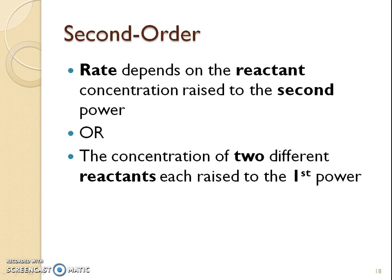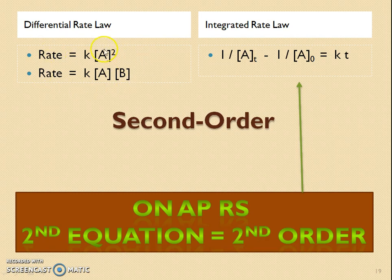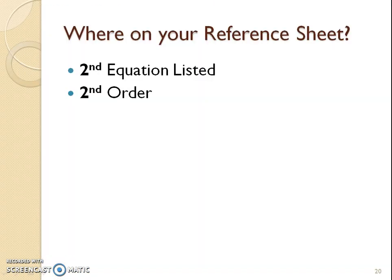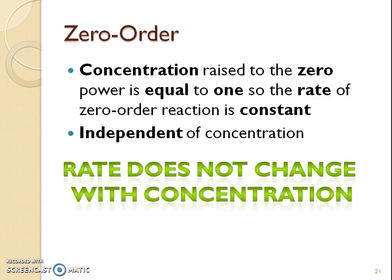For second order, the rate is going to depend on a second power — either one reactant squared or two reactants each to the first power. This is the second equation on your reference sheet: one over the concentration of A at some time minus one over the concentration of A at the beginning equals K times T. Second equation, second-order reaction.